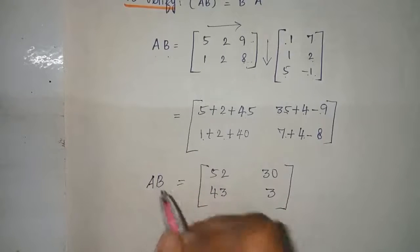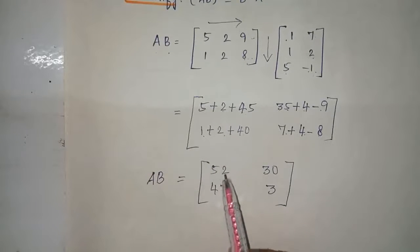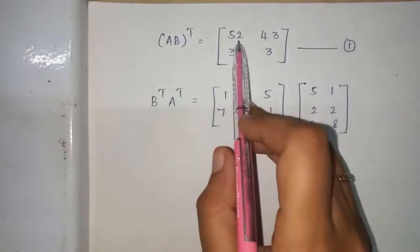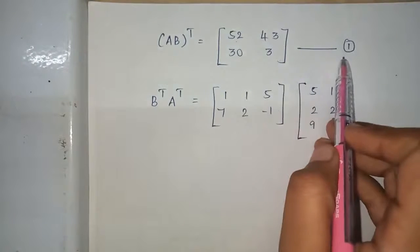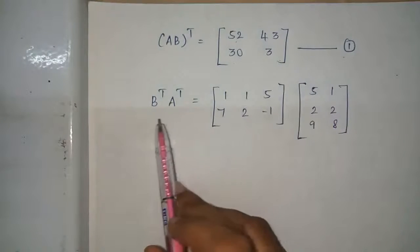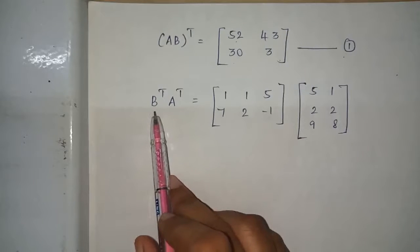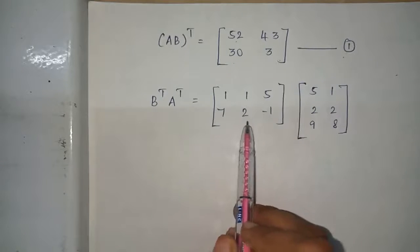So matrix AB is found. Next, find (AB) whole transpose — the columns become rows and rows become columns. (AB) transpose equals 52 43 30 3, which is equation number 1. Next we find B transpose and A transpose and compute B transpose times A transpose.